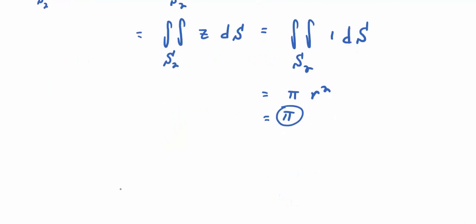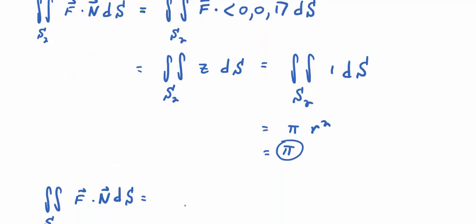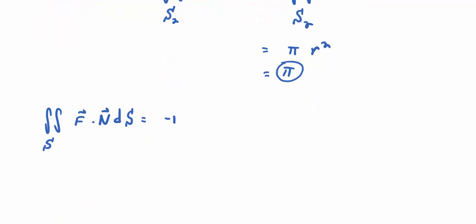So what happens when you compute the flux integral over S? F dot n dS, you end up adding the flux integral over S1, which was negative pi, and the flux integral over S2, which was pi. And you get zero. There you go. Any questions on that? So let's stop.